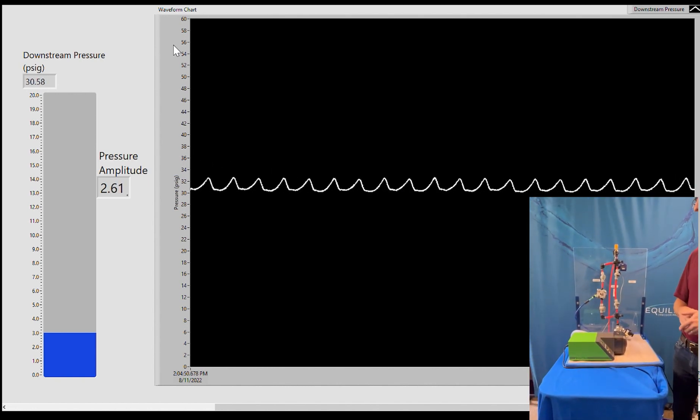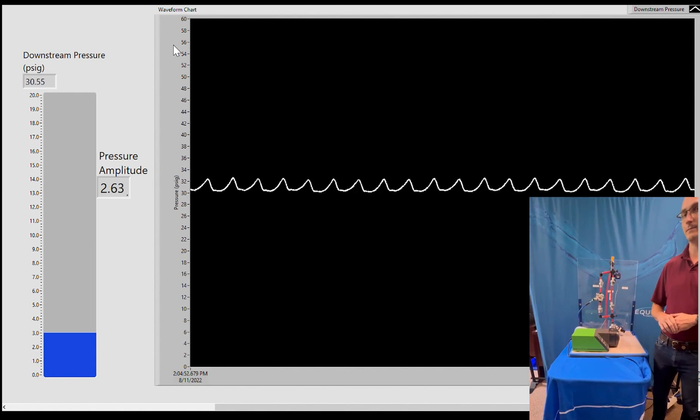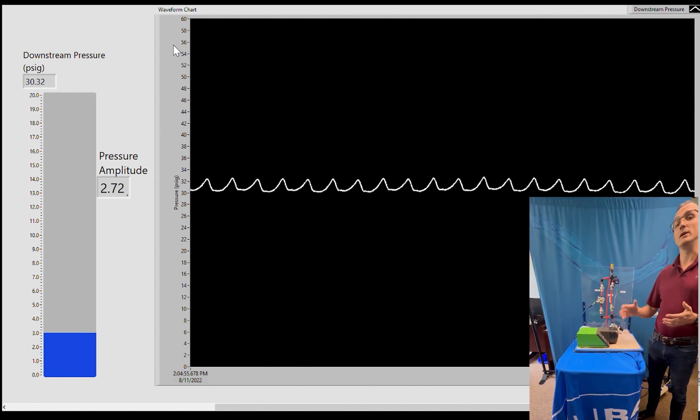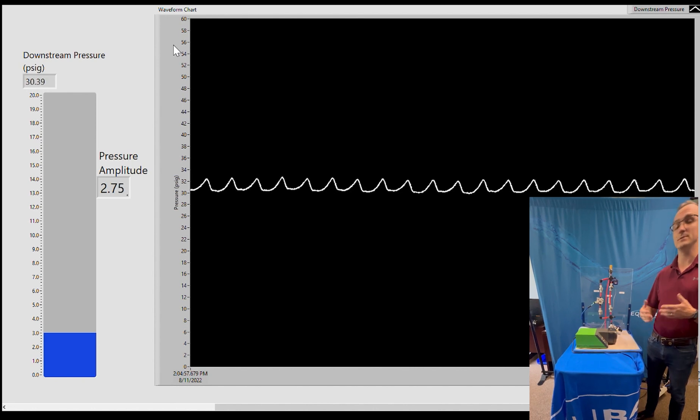We see the full dampening capability of the Equilibar single-use dampener. This amplitude was reduced from about 20 to 2 psi amplitude, which is about a 10x reduction.